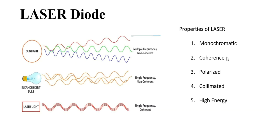Next, coming to coherence. When it comes to coherence, there is only a single phase as shown in this diagram. Laser radiation is highly focused. Polarized means radiation emitted in one plane — radiations are emitted in a single plane. Collimation is focusing in a single direction — no bidirectional, no different directions.